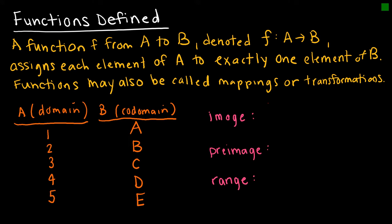A function f from set A to B, and notice how we denote that function, assigns each element of A to exactly one element of B. So every element of A